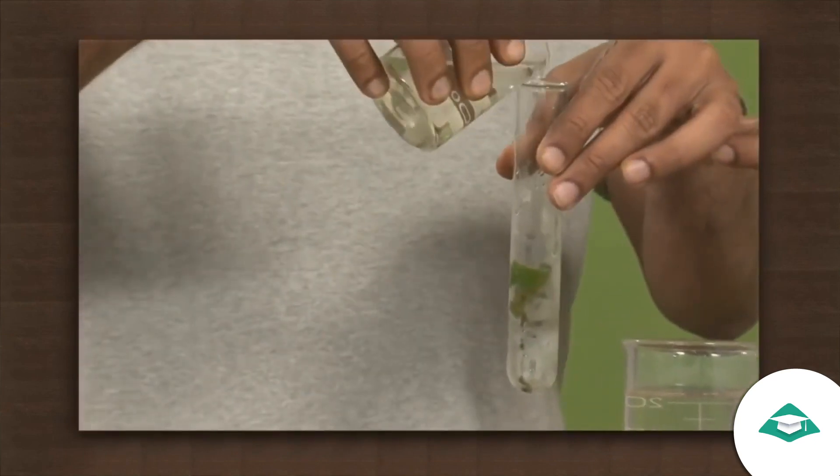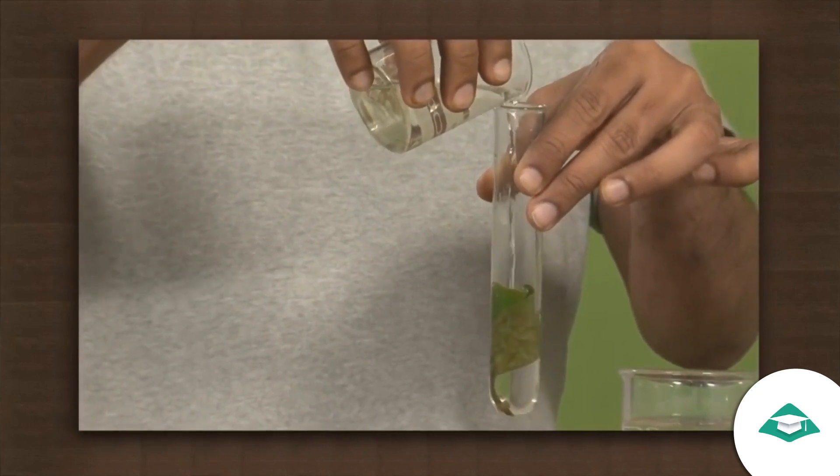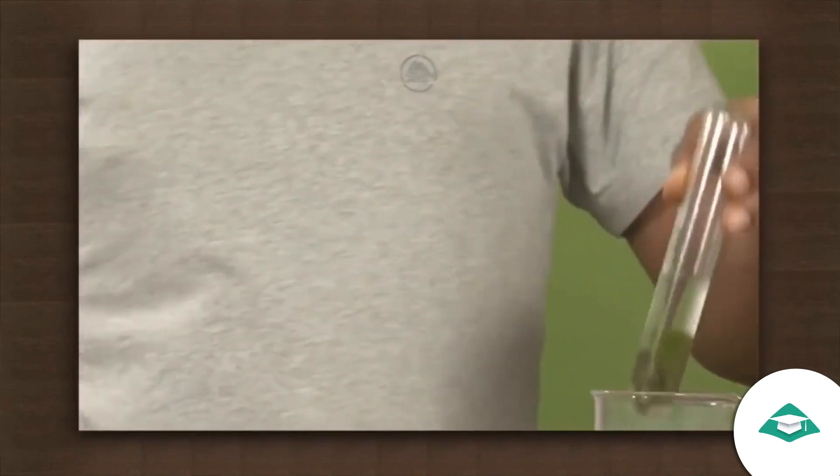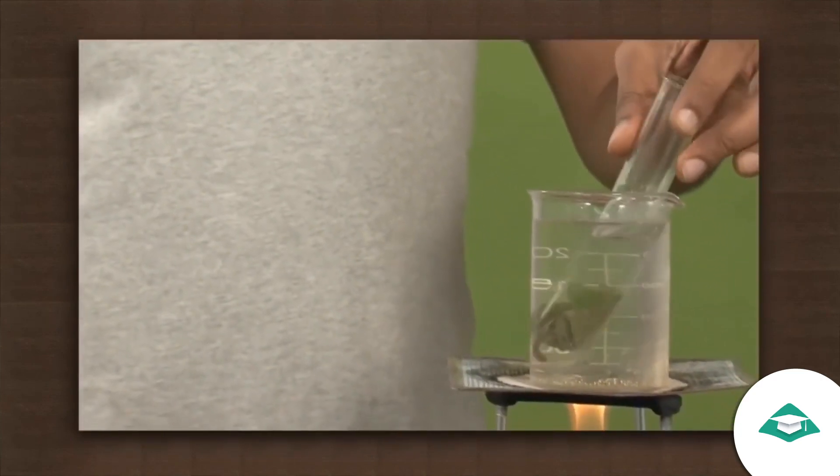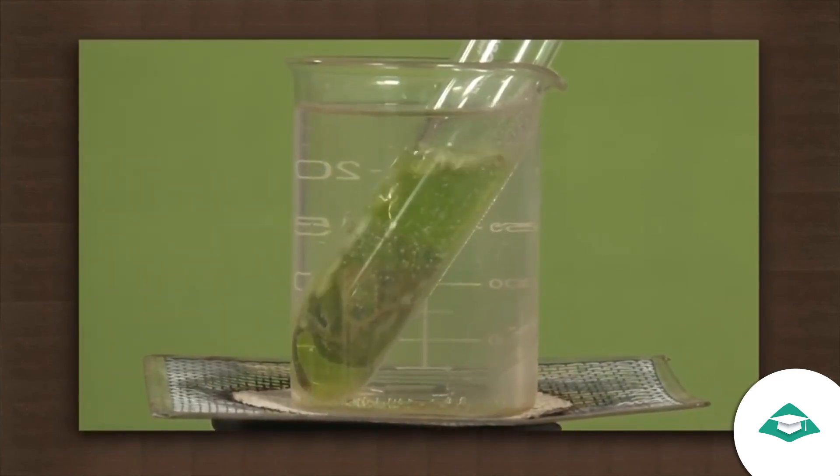Add some alcohol to the test tube so that the leaf is submerged in alcohol. Alcohol should be kept away from the flame because it is inflammable and catches fire easily. Now place this test tube in the beaker again and boil until the leaf becomes colorless.